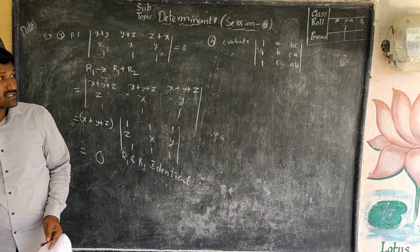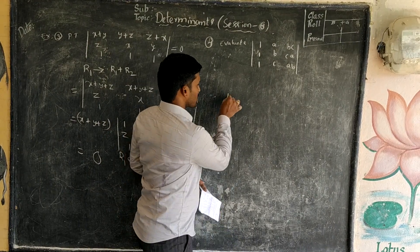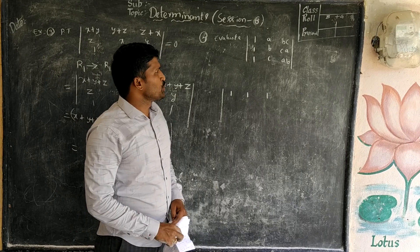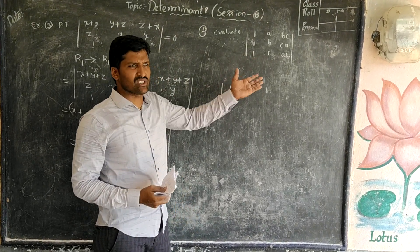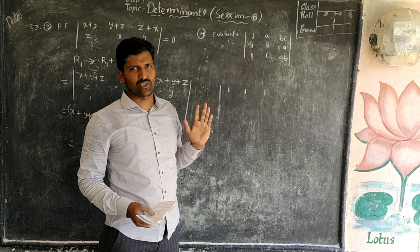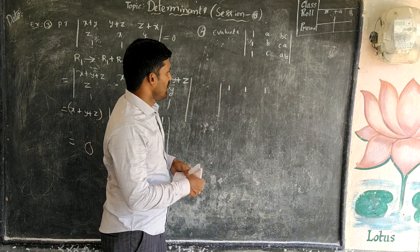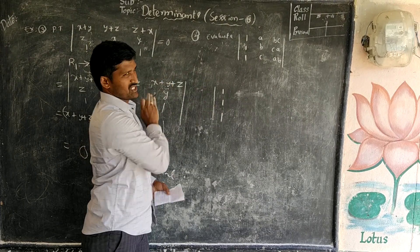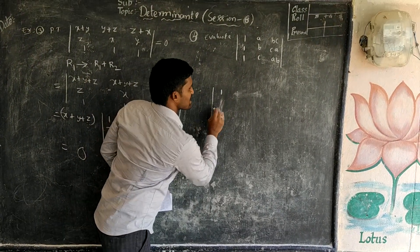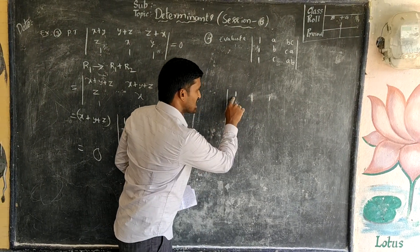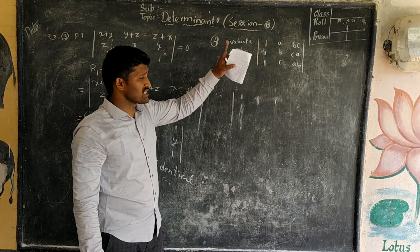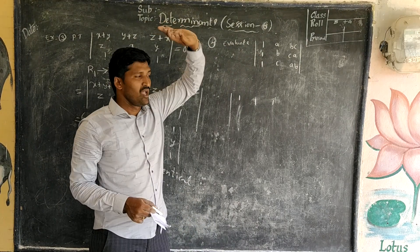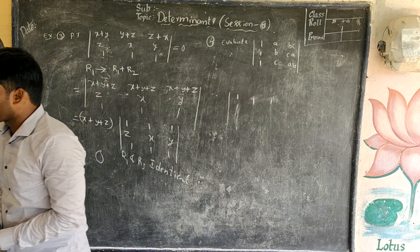Evaluate means we need to find the simplified value. Simple logic to remember: when 1s are present in a row, we need to apply column operations to get more zeros. When 1s are there column-wise, we need to apply row operations. Here, 1s are in row 1, so we apply column operations: C2 minus C1, C3 minus C1 to make those elements 0.